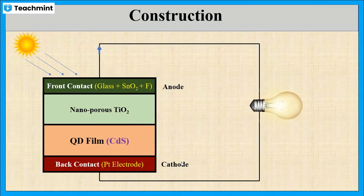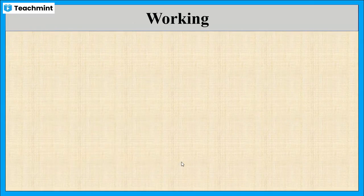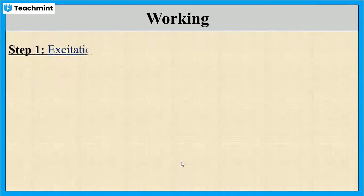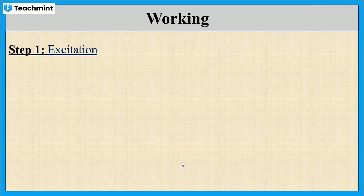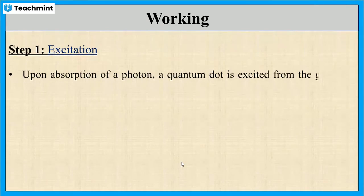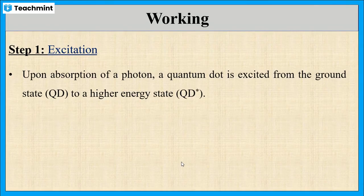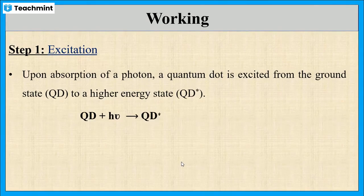Now let us see how this solar cell works. The working can be explained in four steps. In the first step, the solar cell absorbs photons from sunlight through the front contact. This excites the quantum dot from its ground state to a higher energy state.